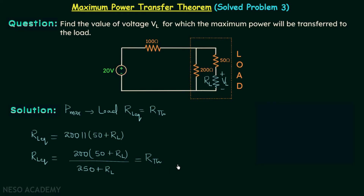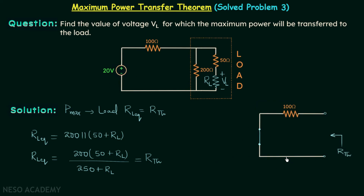Now we will focus on calculating RTH. To find RTH, we open-circuit the load and short-circuit the source to get the modified network. From this modified network we can see that RTH equals 100 ohms.